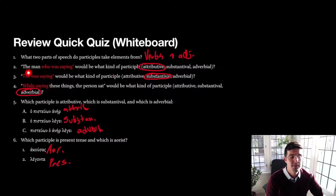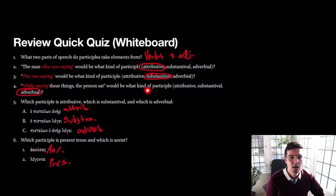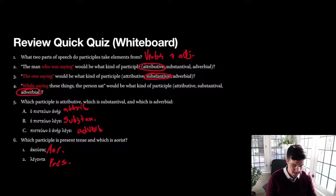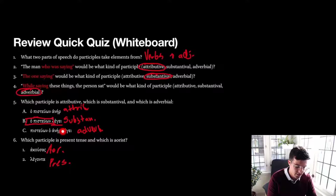'The one saying' would be a substantival participle — just 'ho legōn,' no other noun being modified there. And then 'while saying these things the person sat' would be an adverbial participle — just 'legōn' with no definite article before it, because adverbial participles don't have an article before them. This one's attributive with the participle having the article right before it modifying a noun, this one's substantive where the participle functions as the subject of the verb, and this one is adverbial, telling us the circumstances under which the speaking happens.